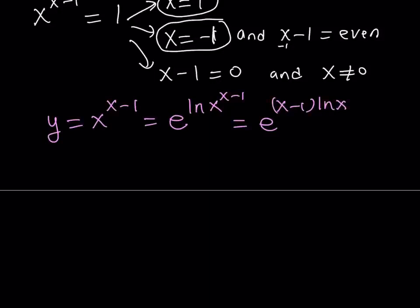Otherwise, I have to use implicit or some other way to do it. Now let's go ahead and differentiate it. This is e to the power u, where u is a function of x. As you know, the derivative of e to the power u is e to the power u times u prime. I can do the u prime first and write it as u prime times e to the power u. So let's go ahead and do the u prime first.